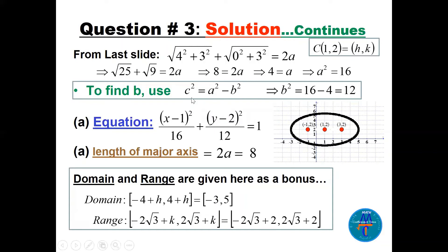Now we have c² = 4 and a² = 16, so b² = a² − c² = 16 − 4 = 12. Since the major axis is horizontal and the bigger number (a² = 16) is under x, the equation is (x−1)²/16 + (y−2)²/12 = 1. The length of the major axis is 2a = 8. The graph shows the center at (1, 2) with the foci nicely placed inside.